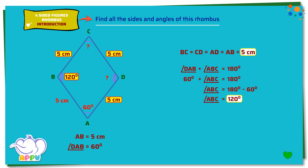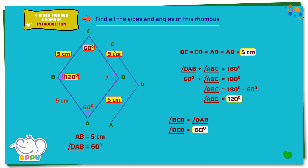Now let's find the remaining angles, angle BCD and angle CDA. We know that a rhombus has opposite angles equal. Angle BCD equals angle DAB, that is equal to 60 degrees. Angle CDA equals angle ABC, that is equal to 120 degrees.